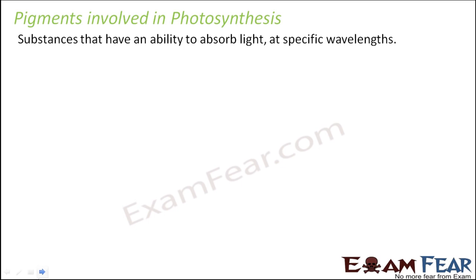Now what are pigments? Pigments are those substances that have an ability to absorb light at specific wavelengths. Chlorophyll is an example of a substance which is present inside a plant and it has the ability to absorb light at specific wavelengths. Even in visible light alone, each component of light has different wavelengths. If you compare the wavelength of red light to blue light, the difference in wavelength is quite huge. So substances which have the ability to absorb light of some specific wavelengths are known as pigments.